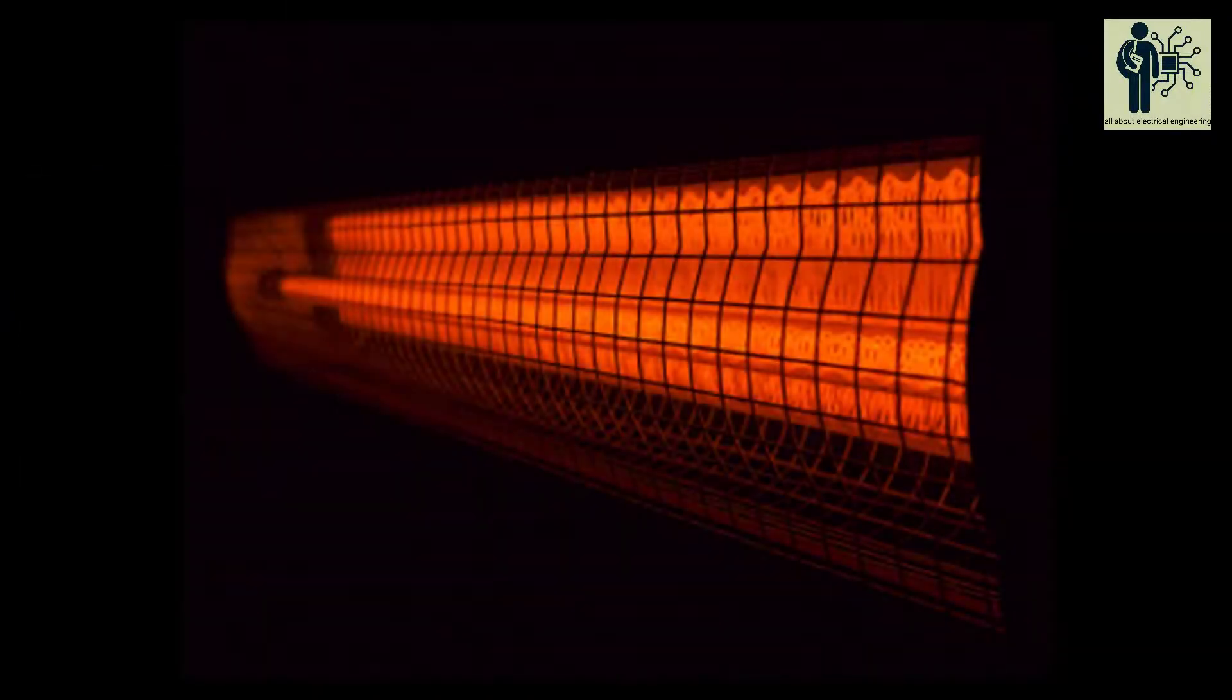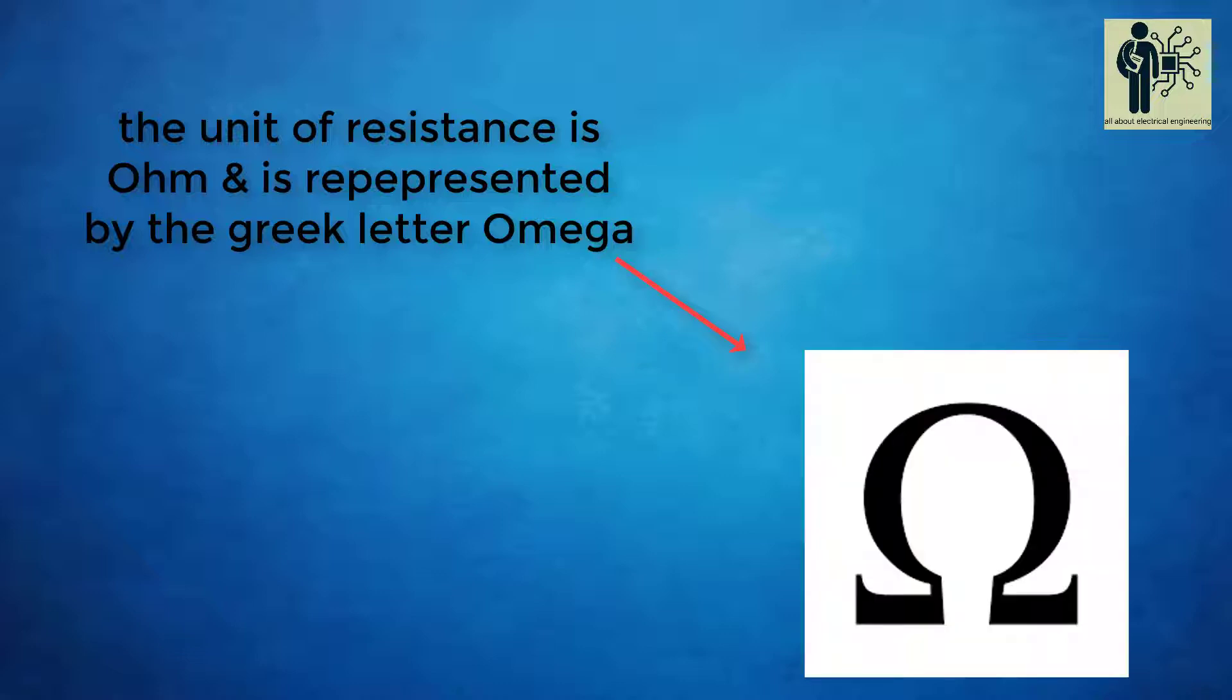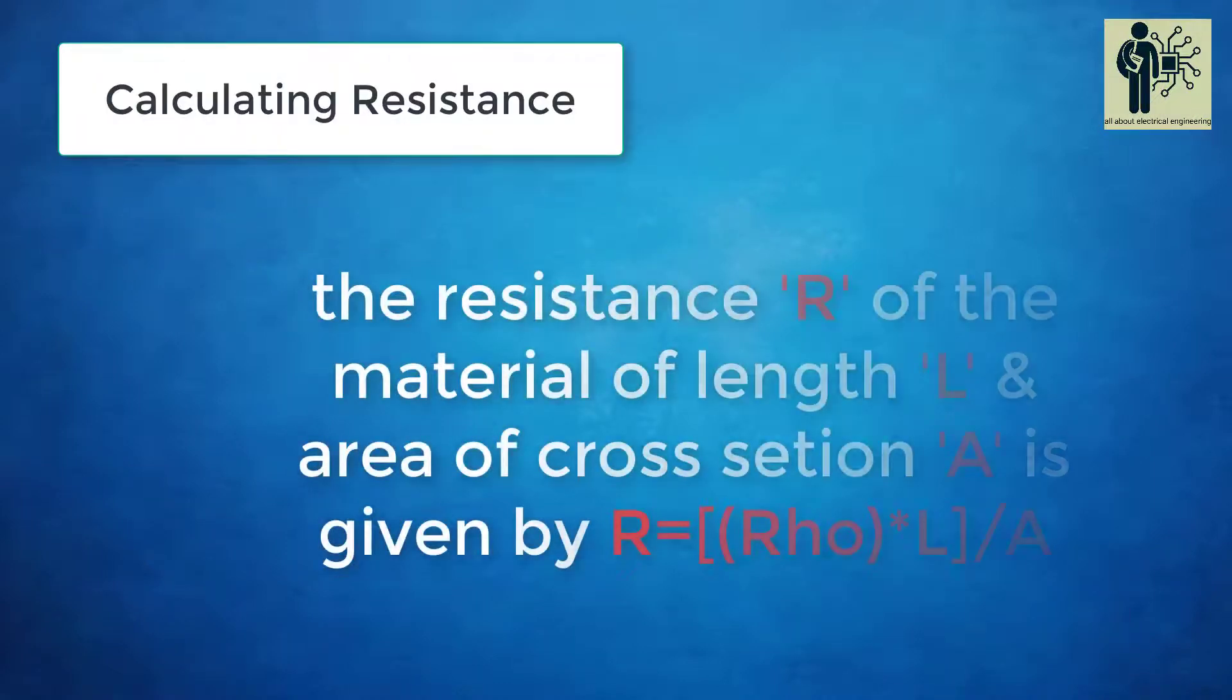Current flows through a resistor generates heat. The heat creates light energy. The unit of resistance is ohm and is represented by the greek letter omega. The resistance R of the material of length l and area of cross section a is given by R = ρl/a.